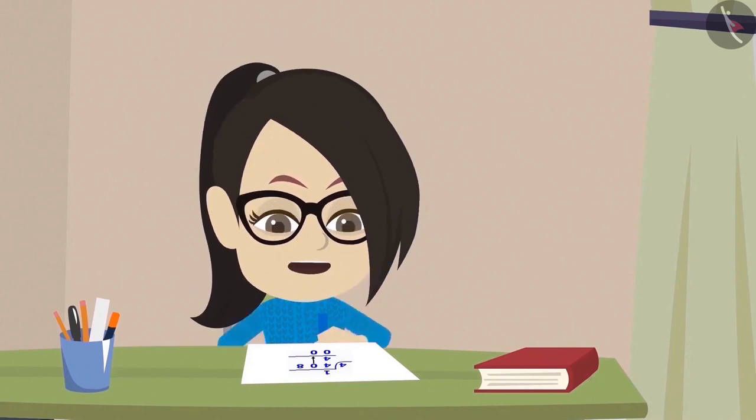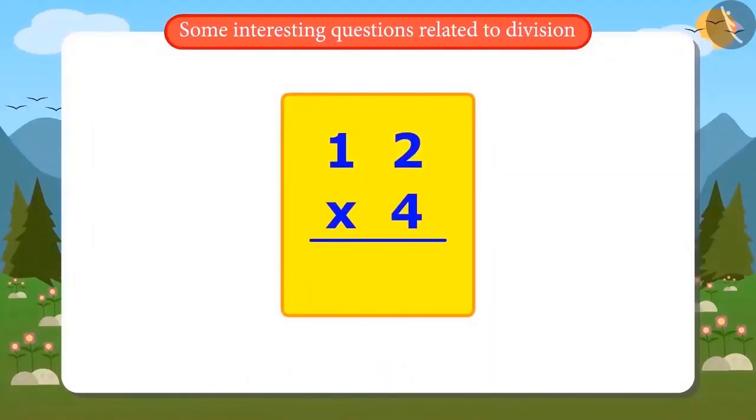I will multiply 4 by 12 to check if this division is correct or not. 4 times 2 is 8 and 4 times 1 is 4. The answer came 48.